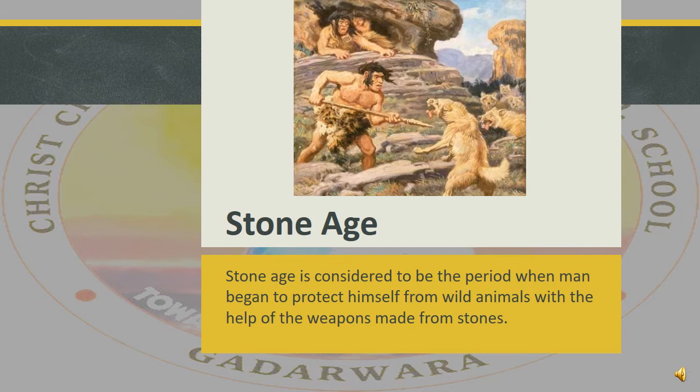As you can see in this picture, how men protected themselves from wild animals. At that time, men roamed in forests, on mountains and in river valleys, and lived on fruit, roots, or by hunting animals. These were all the sources for their living.